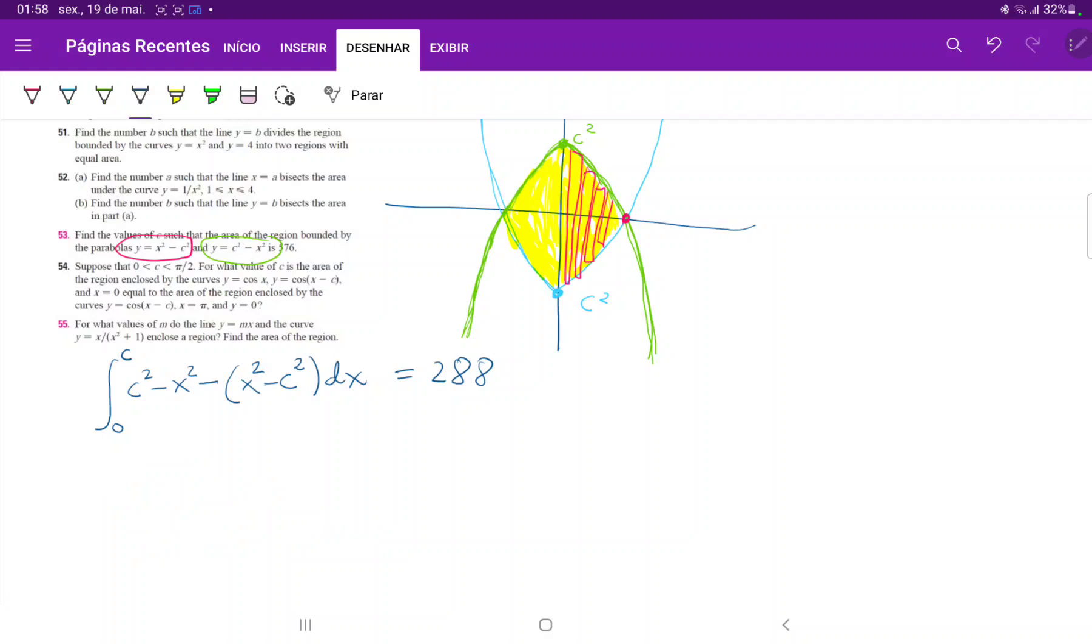So let's just simplify this integral a little bit. This is the integral from 0 to c of c² - (-c²) is 2c², and then -x² - x² is -2x². And then all of this times dx.